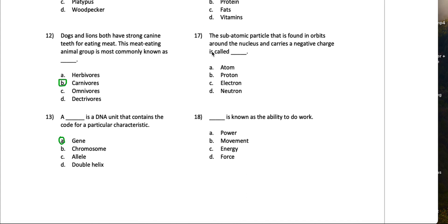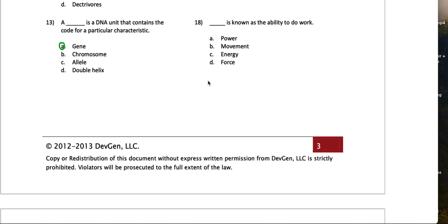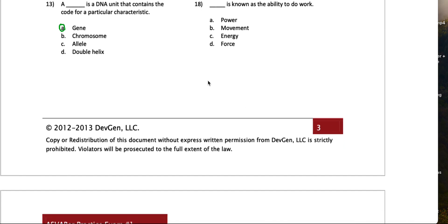17, the subatomic particle that is found in orbits around the nucleus and carries a negative charge is called an electron. I mean, if you're an electrical engineer you've done enough of this, they've literally drilled it into you. So yes, it's an electron, they carry the charge.